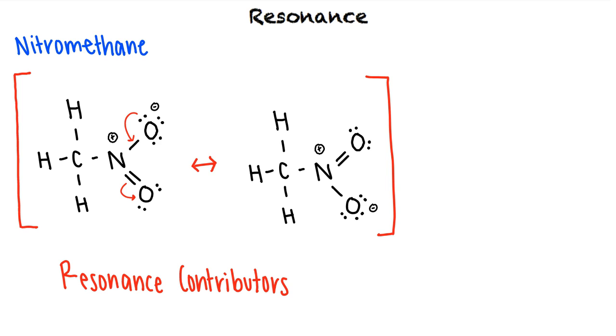So how do we draw the actual structure? To draw the resonance hybrid, we identify what parts of the two structures remain constant. We see that the only things that change are the location of the double bond and the location of the lone pair of electrons. To account for this, we draw dashed lines between the three atoms involved in the conjugated system. In this case, the negative charge is equally distributed on both of the oxygen atoms, so we say that each one has a half negative charge.